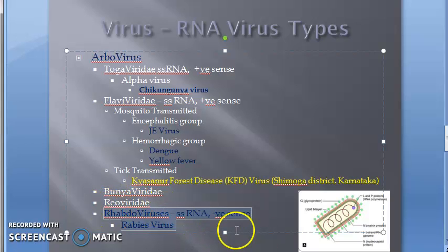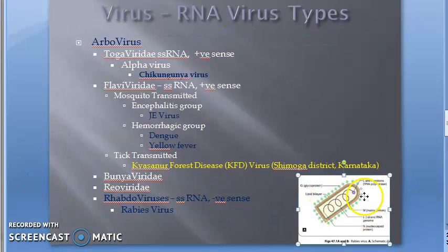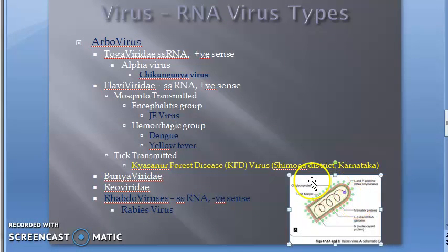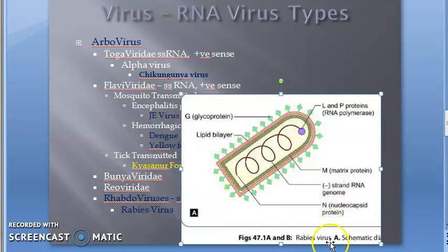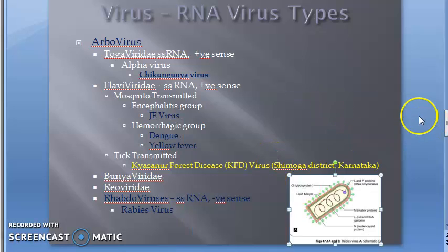Rhabdovirus — let's look at it now. Under rhabdovirus, you have rabies virus. Rabies virus is an RNA virus. It has the shape of a bullet and has RNA polymerase with single-stranded RNA. Remember, the only RNA virus with double-stranded RNA is rotavirus, as we already told.